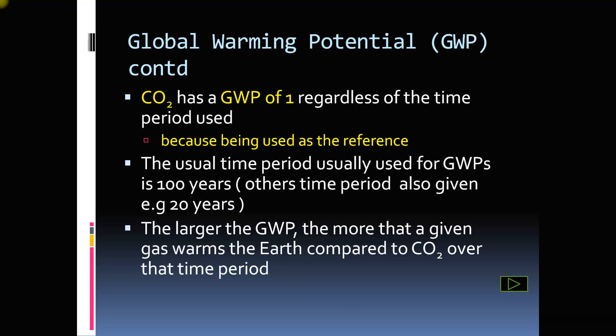We use a particular time period for mentioning global warming potential. The reference gas is carbon dioxide, which has a global warming potential of one. The time period normally used is 100 years, but it can be other periods as well, for example 20 years. If a gas has a larger global warming potential, that means it warms the earth more than carbon dioxide for that period of time.